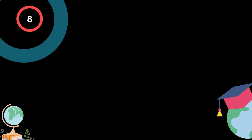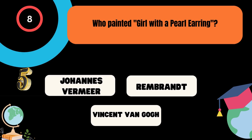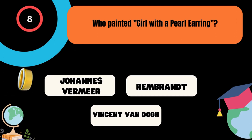Who painted Girl with a Pearl Earring? A. Johannes Vermeer, B. Rembrandt, C. Vincent van Gogh. And the correct answer is Johannes Vermeer.